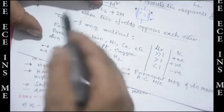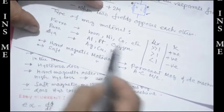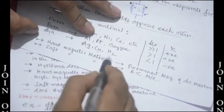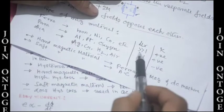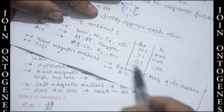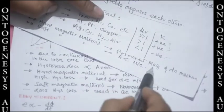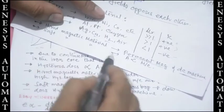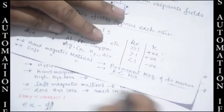Types of magnetic materials: ferromagnetic (iron, nickel, cobalt), paramagnetic (aluminum, platinum, oxygen), and diamagnetic (gold, silver, copper, hydrogen, air). For ferro, μ >> 1; for para, μ > 1; for dia, μ < 1. Susceptibility is positive for ferro and para, and negative for dia. Hard magnetic material is used in permanent magnets and DC machines; soft magnetic material is used in AC machines. Hard magnetic material has more hysteresis loss; soft magnetic material has less.